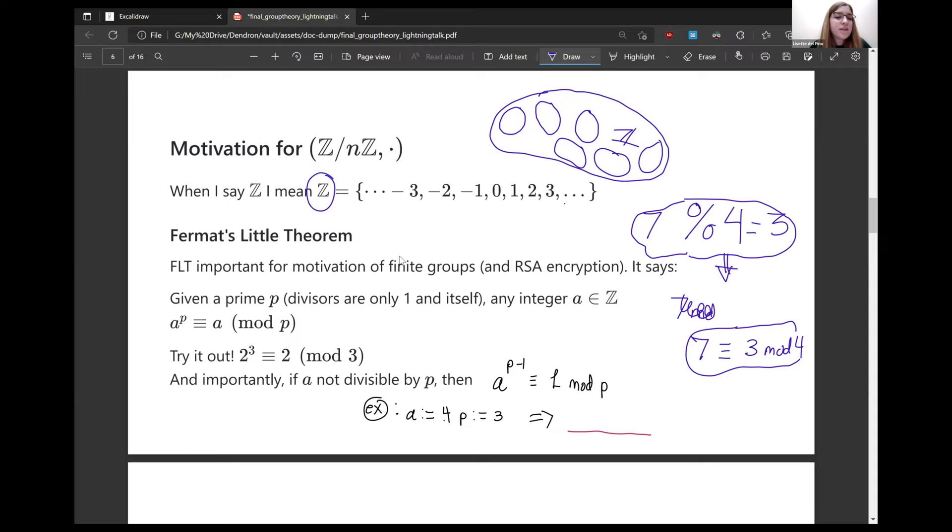So Fermat starts noticing a couple of funny little patterns in the integers. And if you're not familiar with what a prime is, it's just a number whose divisors are only one and itself. So examples of primes are two, one is never a prime canonically, two, three, five, seven, eleven. These are numbers that you can't divide by anything else. The only divisors are one and themselves.